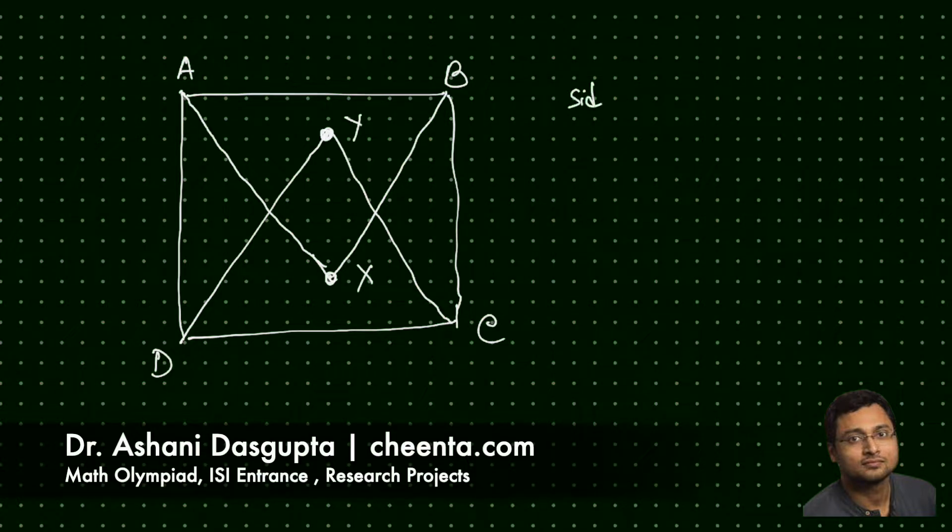Side length of the square is equal to 1, and let me say this one more time: AXB and CYD are equilateral. We want to find out the length of XY.